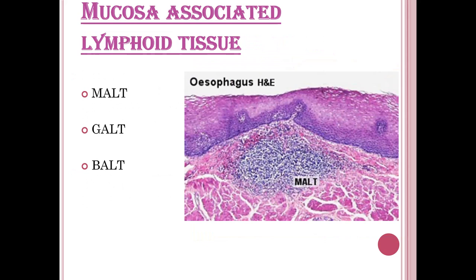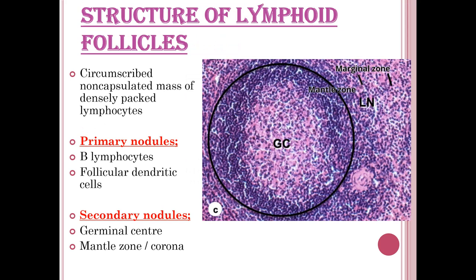Mucosa-associated lymphoid tissue (MALT) includes GALT and BALT. Lymphoid follicles are circumscribed, non-capsulated masses of densely packed lymphocytes. They consist of primary nodules and secondary nodules. Primary nodules contain B lymphocytes and follicular dendritic cells. Secondary nodules have a germinal center and a mantle zone, also called the corona.